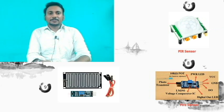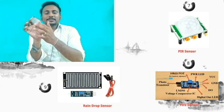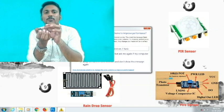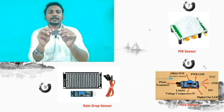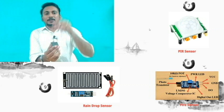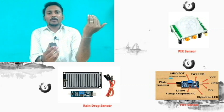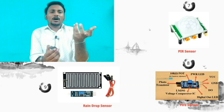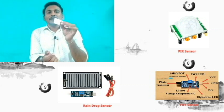The next sensor is the rain drop sensor. If you place conducting lines on the board and water drops on them, it will change the resistance. This change in resistance is detected. For example, if you place it on a car, when rain is detected, the wiper will automatically operate. That can be done with the rain drop sensor.